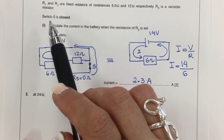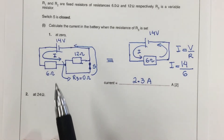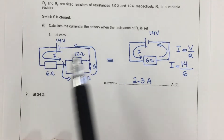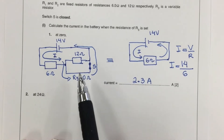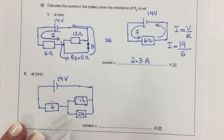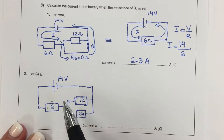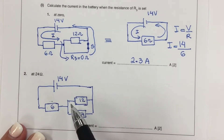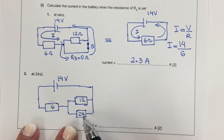Again, with the switch closed, I want to calculate the current flowing through the circuit when the variable resistance R3 is set at 24 ohms. So now I calculate the current in this circuit when the resistor is set at 24 ohms.